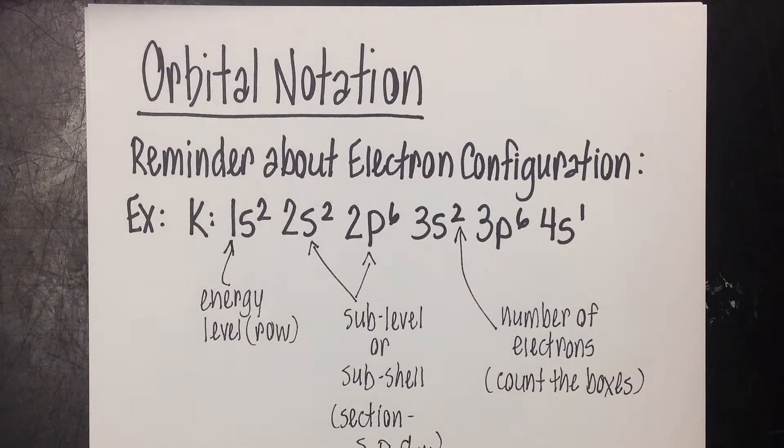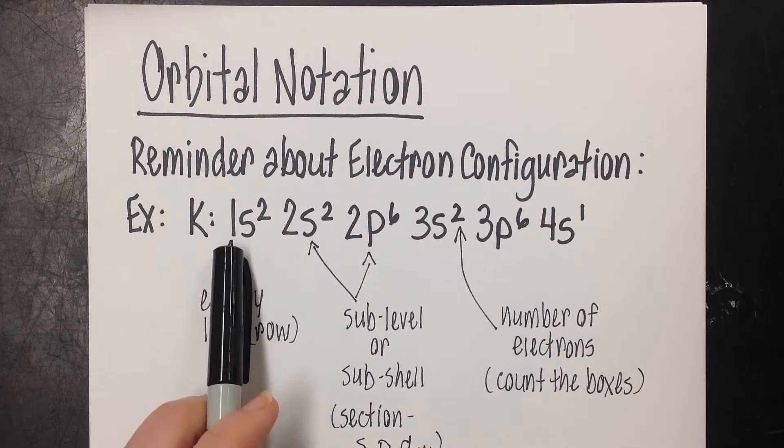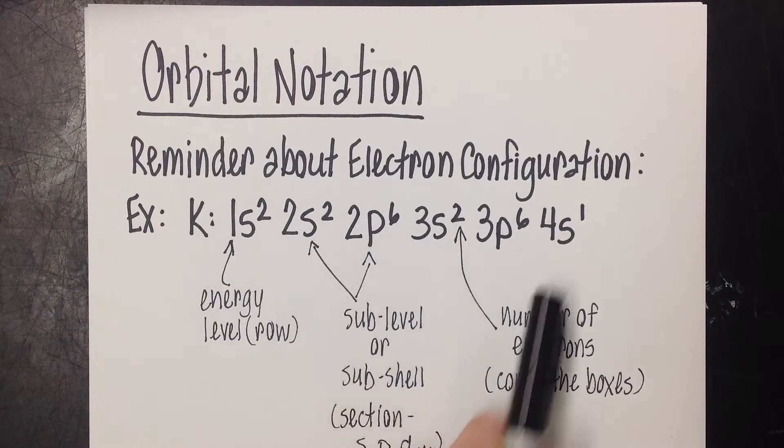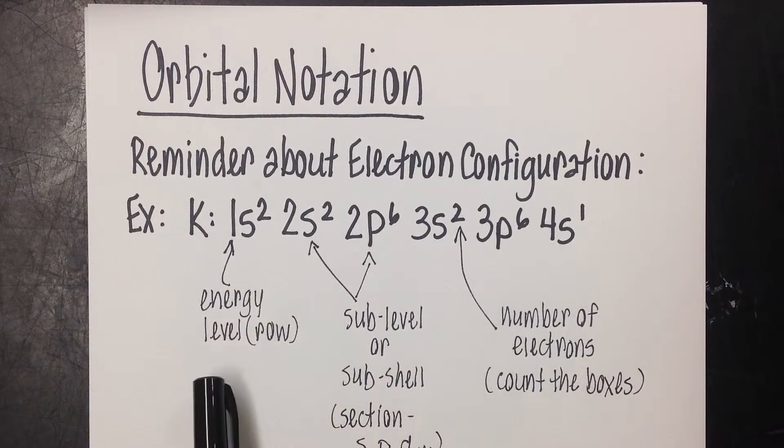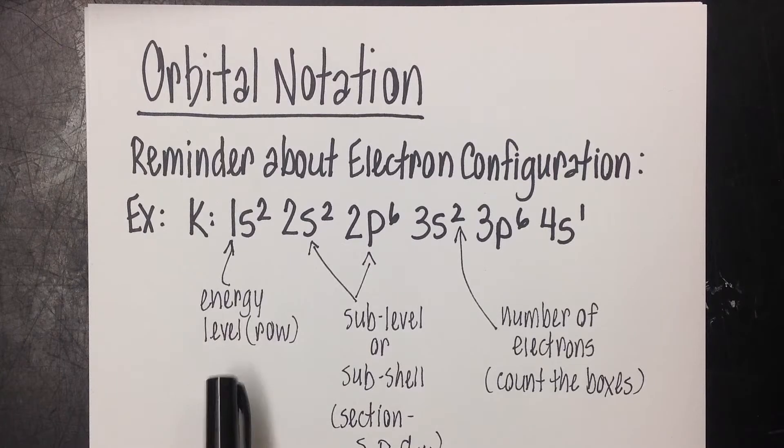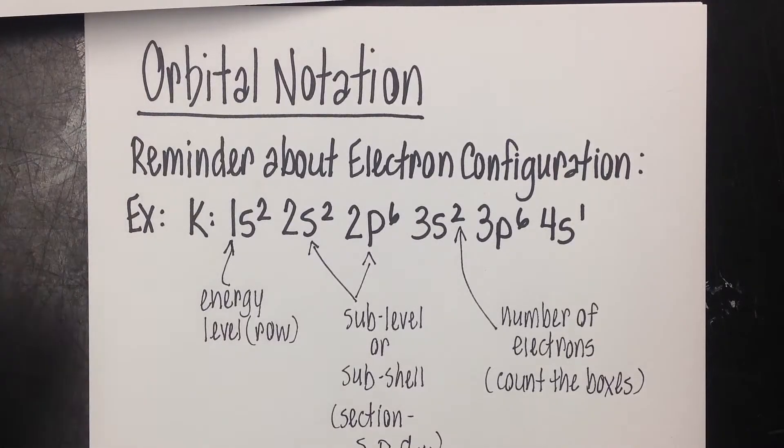When we write electron configuration, this coefficient in the front, the 1s and the 2s and the 3s and the 4 that you see, these are our energy levels. And we get that from the row of the periodic table.